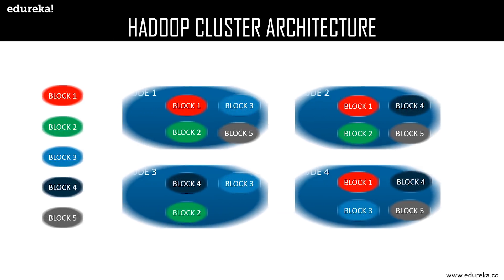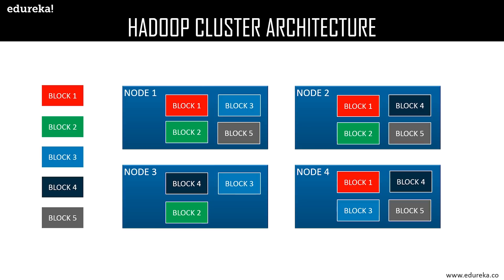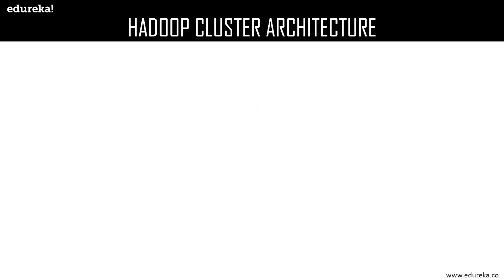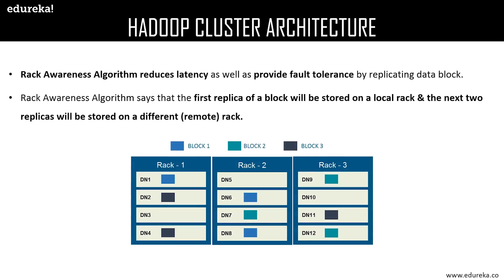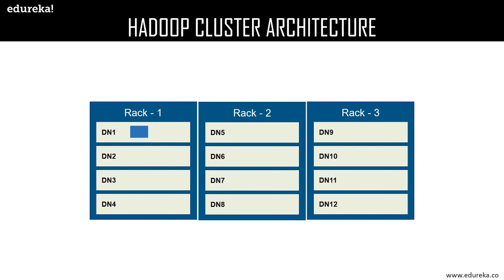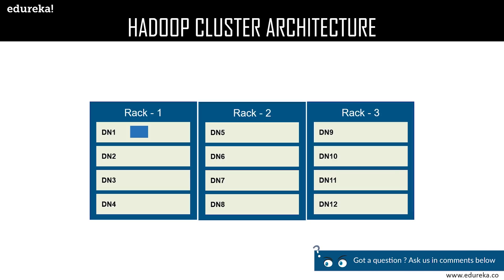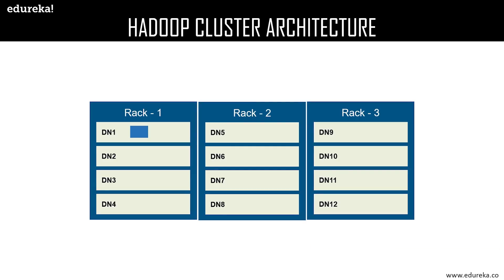Now let us move on to the rack awareness algorithm, which is all about data storage. The first replica of actual data must be located in the local rack, and the rest of the replicas can be stored on a different remote rack. For example, a data block on data node one is available on rack one — the local rack. According to the rack awareness algorithm, replicas of this data block can be stored in remote racks such as rack two or rack three. As seen in the example, the replicas have been stored in the remote rack, which is rack number two.